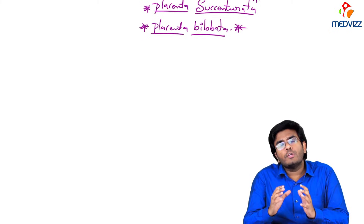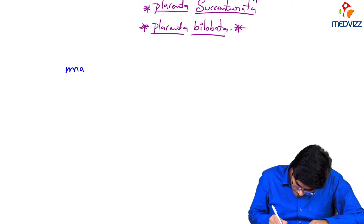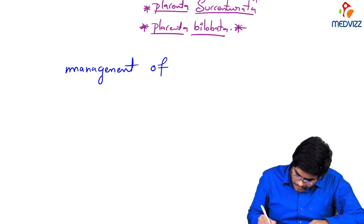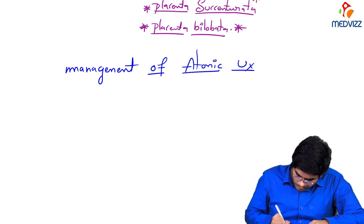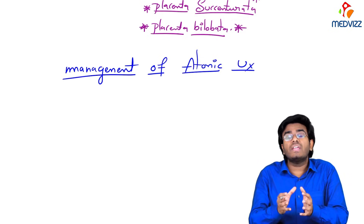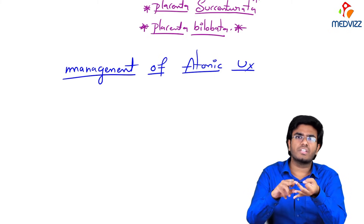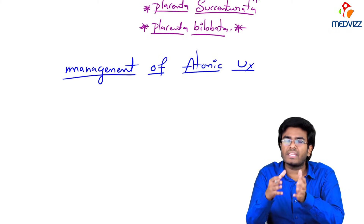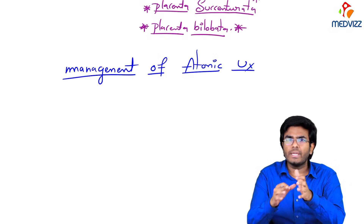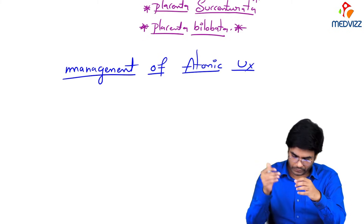Let's see how we are going to manage the atonic uterus. If the uterus is not contracting, we have to make the uterus contract by giving uterotonic drugs. Before giving uterotonic drugs, you have to take care of ABC — airway, breathing, circulation — and resuscitate the patient by giving blood. Now I'm mainly talking about the uterotonic drugs which are supposed to be given.